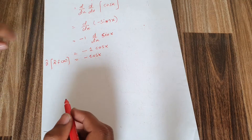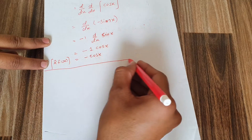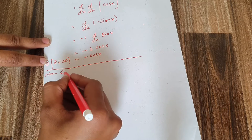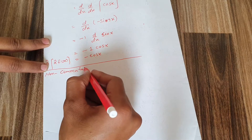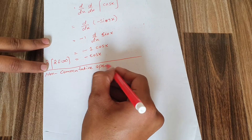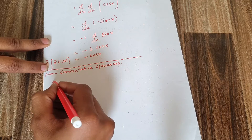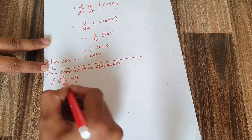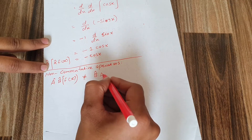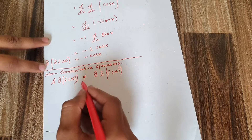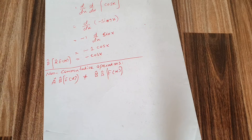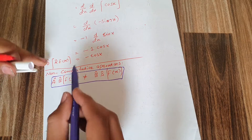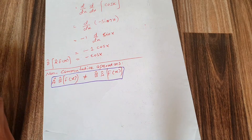Sometimes the answer does not come out equal to each other — such operators are called non-commutative operators. In non-commutative operators, A·B·f(x) is not equal to B·A·f(x). In this case, operators do not commute with each other, and the property is called the non-commutative property.